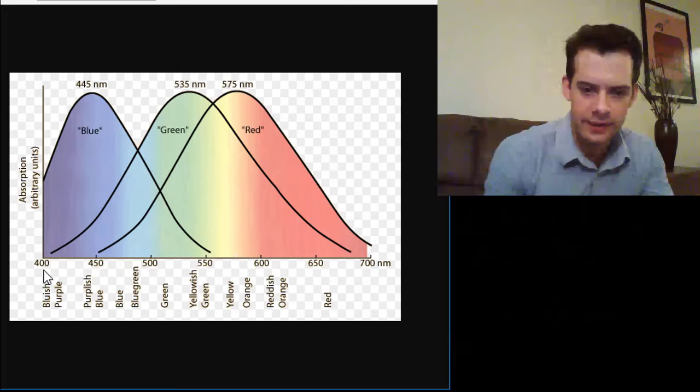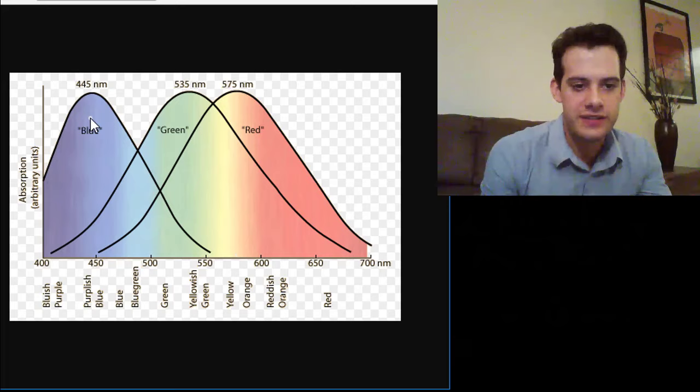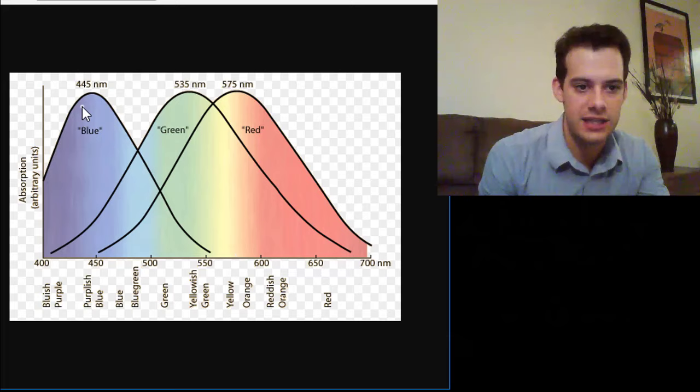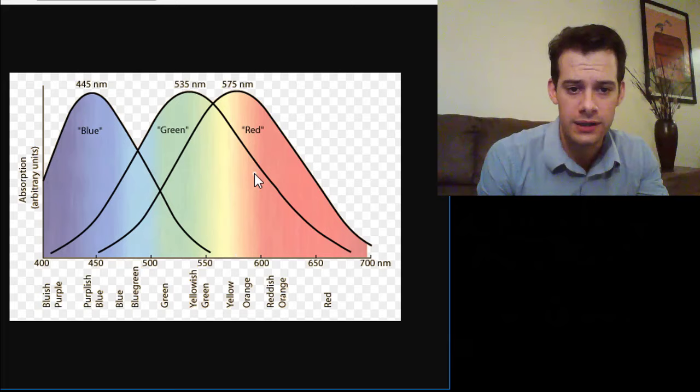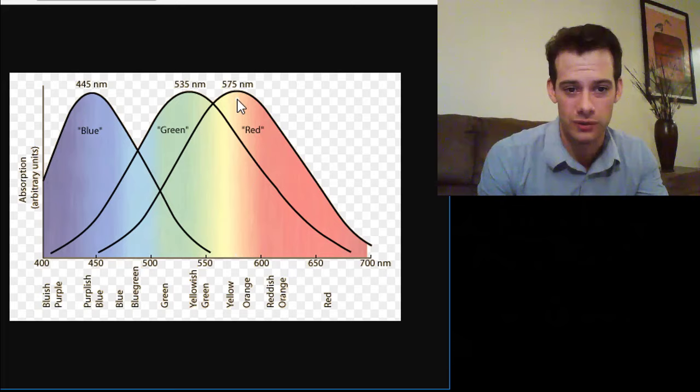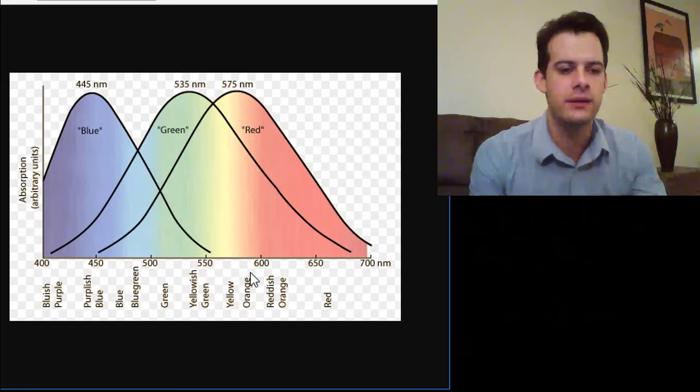So this shows that each of these lines here represents a cone type and it shows the maximum sensitivity, the wavelength that it responds most intensely to, down to lesser response to different wavelengths. And so we see this would be the short cone here, this would be the medium here, and this would be the long. And the reason I said that the blue, green, and red labels aren't really that precise is because you'll notice that the red cone, the longer wavelengths, actually peaks its sensitivity closer to a yellowish, sort of orange color, rather than what we would think of as pure red.